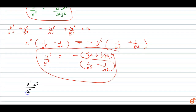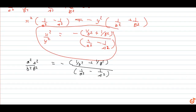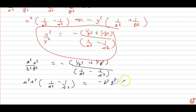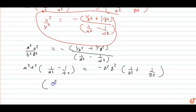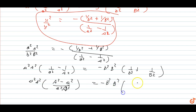Cross-multiplying and rearranging: small a-square times capital A-square into (1 upon small a-square minus 1 upon capital A-square) equals minus small b-square times capital B-square into (1 upon small b-square plus 1 upon capital B-square). Simplifying, capital A-square minus small a-square equals small b-square plus capital B-square.